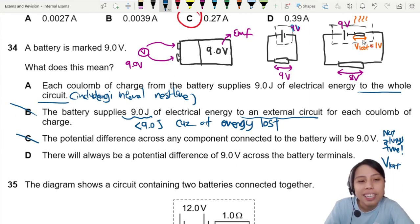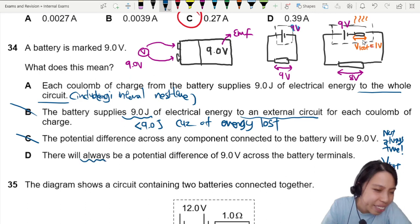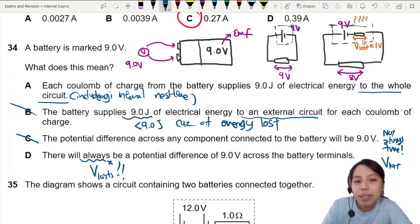D, there will always be a potential difference of 9 volts across the battery terminals. Always? No. Thanks to lost volts. Because, for batteries like this, your terminal potential difference means if I measure the potential from across both terminals of the battery, from one end to the other, that's what we call terminal potential difference.